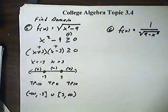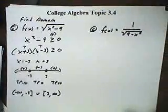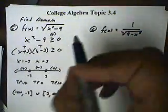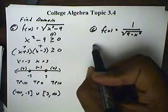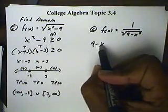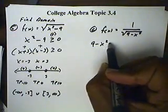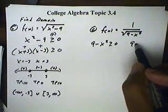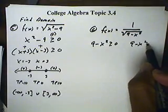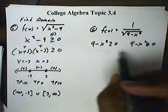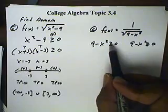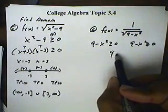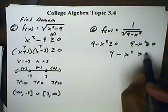Now, number 6. Number 6, we have a rational function, but it's in the denominator. Again, the fact that we have a rational function means 9 minus x squared is set greater than or equal to 0. But because it's in the denominator, we say 9 minus x squared is not equal to 0. When we combine these two concepts — greater than or equal to, but not using the equal sign — we use the expression 9 minus x squared is greater than 0.